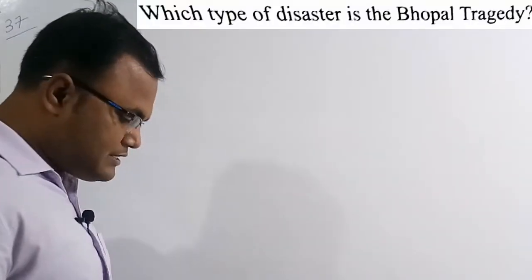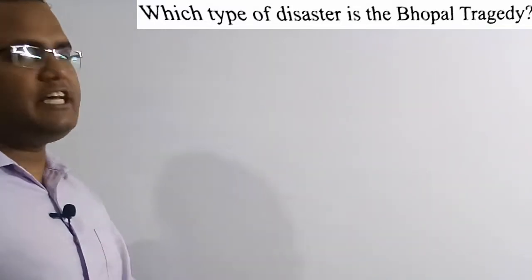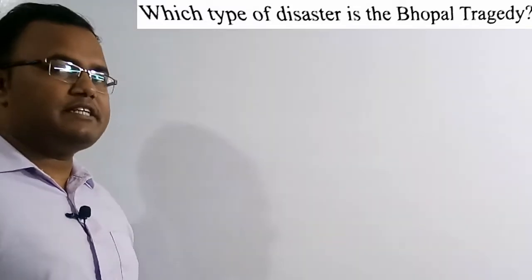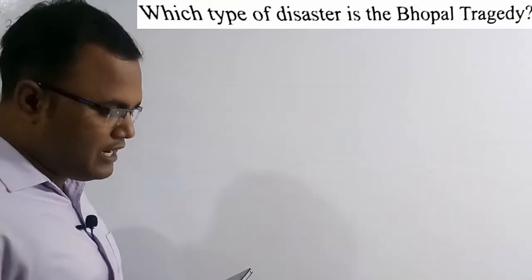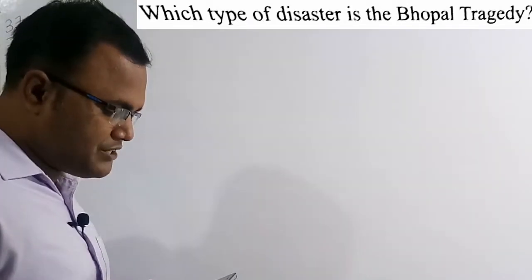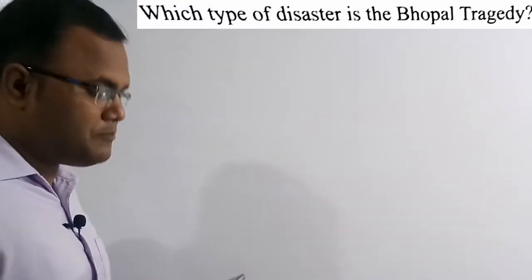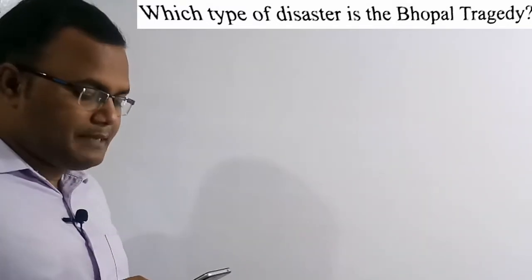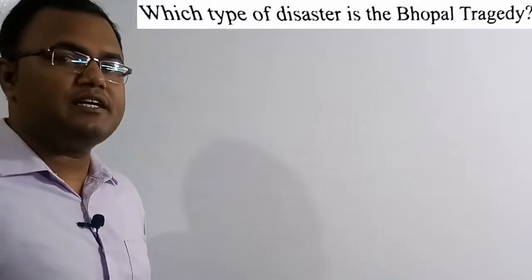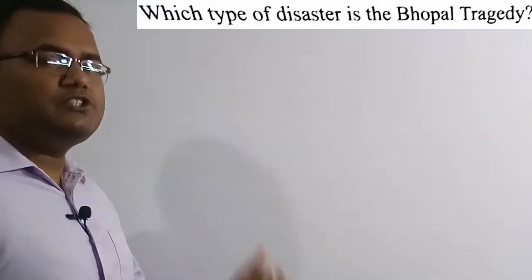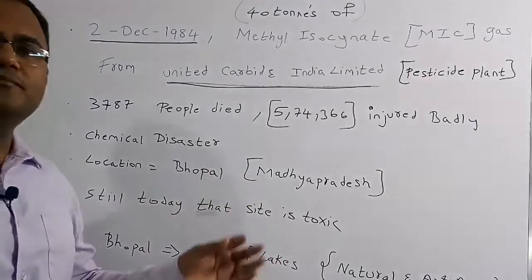The 37th question: Which type of disaster is the Bhopal tragedy? Option A: Biological, Option B: Chemical, Option C: Natural, Option D: Difficult to categorize. The correct answer is Option B — Chemical. The Bhopal tragedy is a chemical disaster.